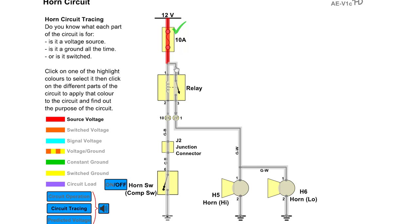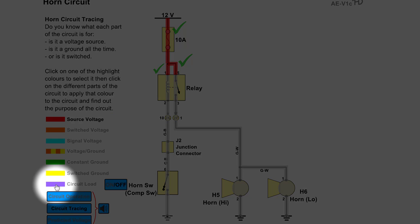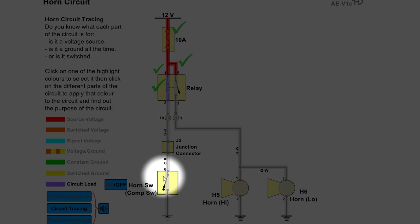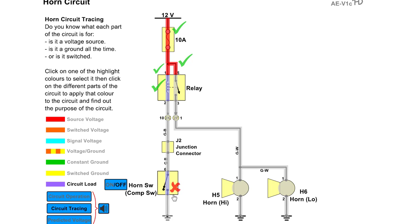Students can indicate source voltage or circuit load, and as they do this, it's evaluated for them in real time. So if I color something that's not the circuit load, it immediately tells me I'm incorrect.